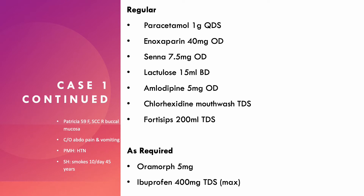The important medication to be aware of is ibuprofen. Looking at the chart, the patient has been taking ibuprofen very regularly since admission, but there's no proton pump inhibitor for gastroprotection. Working through the other medications: paracetamol is for regular analgesia; enoxaparin is a low molecular weight heparin to prevent venous thromboembolism; senna is a stimulant laxative to prevent constipation while the patient takes opioids such as oromorph; lactulose is also a laxative for the same purpose. Amlodipine is a calcium channel blocker for hypertension, chlorhexidine mouthwash keeps everything clean, and Fortisips supports nutritional intake.